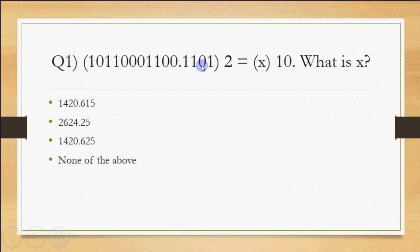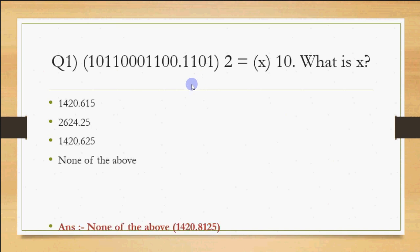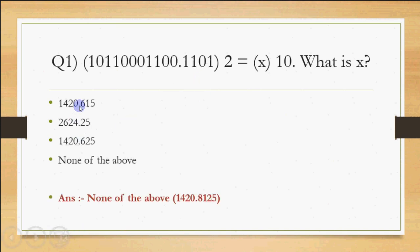You calculate everything including the negative power terms. The answer that comes from the negative power part — positions 1, 4, 2, 0 — will be in the next part. The value is not 6.15 or 6.25; it is something like 0.8-something. So it doesn't match any of the given options. The full value is 1420.8125, which doesn't match with any option in the negative power section.